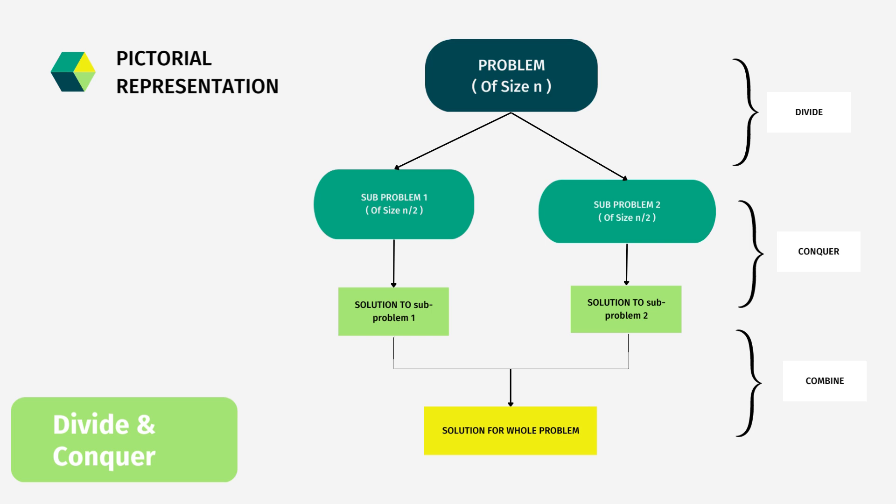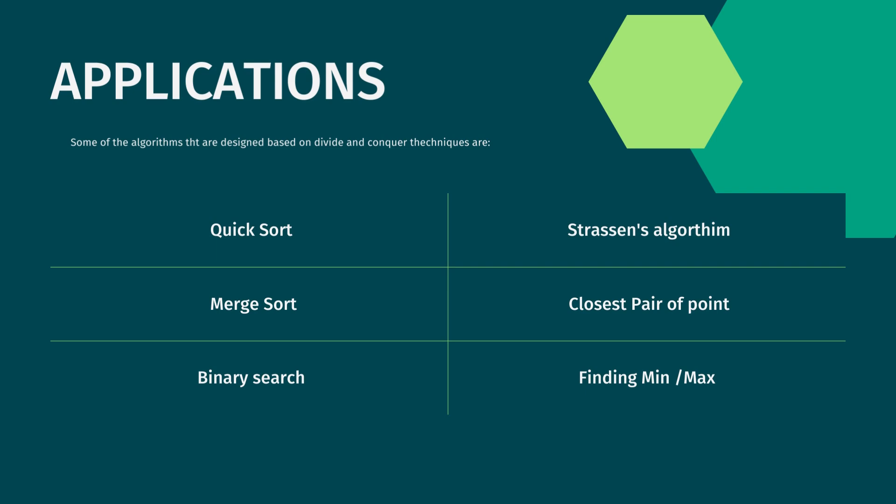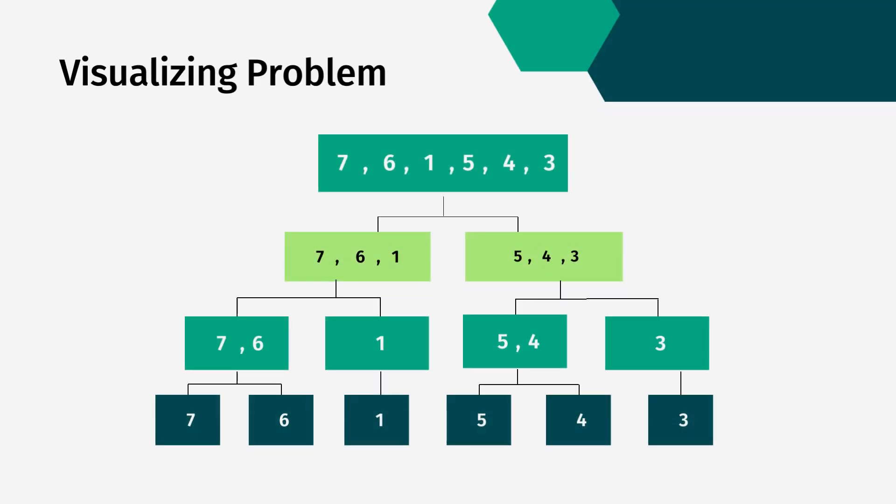There are several algorithms designed based on the divide and conquer technique. These include sorting algorithms like quicksort and merge sort, binary search, finding the minimum and maximum in a problem, and the closest pair of points. Strassen's algorithm, which is an algorithm for matrix multiplication, is also based on the divide and conquer technique.